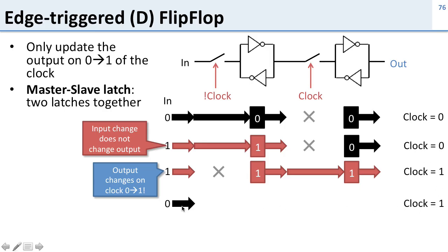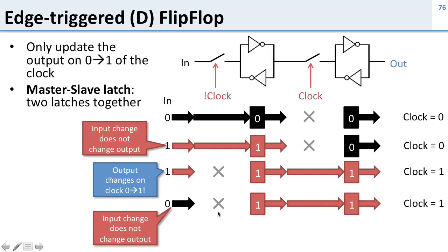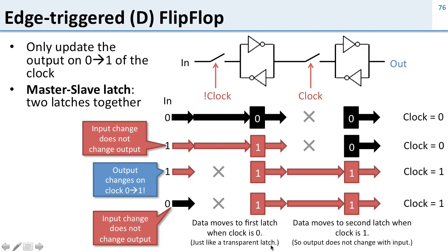Now if the clock is still one and we change our input to zero, it can't write into the first latch so the first latch remains one. We're still writing from the first latch to the second latch, so the output stays one. The input change does not affect the output. So this master-slave latch works in two steps: data moves into the first latch when the clock is zero, then data moves to the second latch when the clock is one. The output does not change when the clock is high because we can't write new data into the first latch while the clock is high.